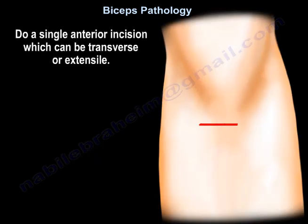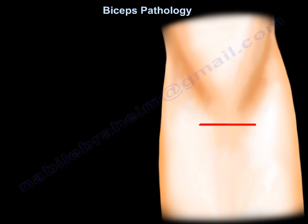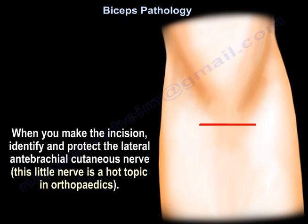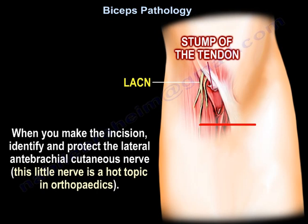A single anterior incision — transverse or extensile — is used. There is a transverse incision distal to the antecubital fossa for distal biceps tendon repair. When you make the incision, identify and protect the lateral antebrachial cutaneous nerve, as this nerve is a hot topic in orthopedics.